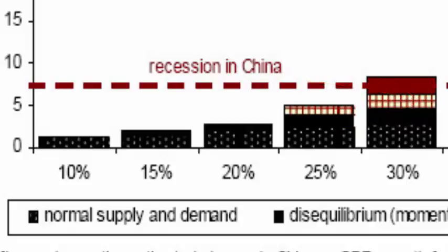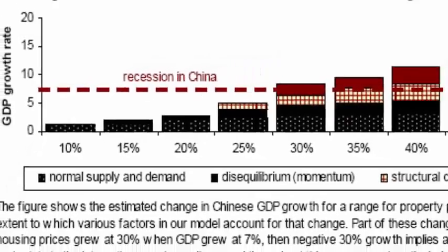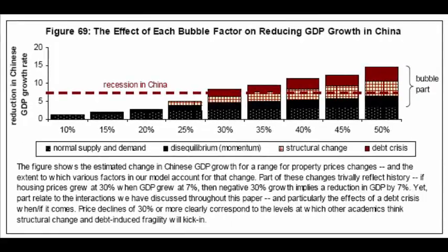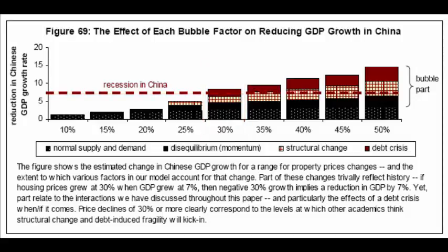That amount of price change is so rapid and so large that savers would start to distort their choices, that construction firms would start to distort projects that they work on, and so forth. As property price decreases hit that magic number of 30%, the effect on GDP growth would be so catastrophic as to bring the Chinese economy completely grinding to a halt.